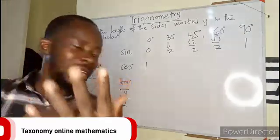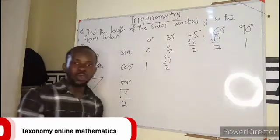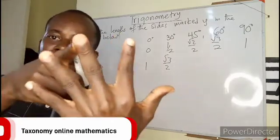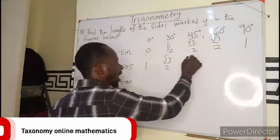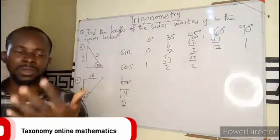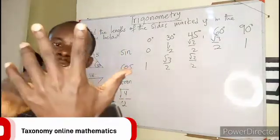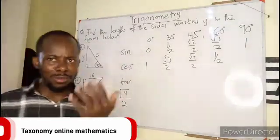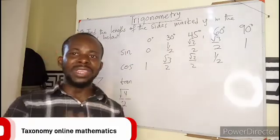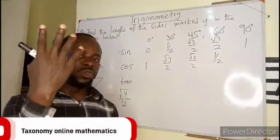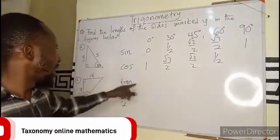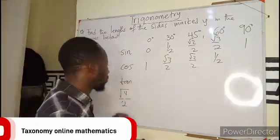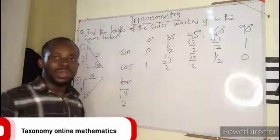30 above, how many? 3. So root 3 over 2. 45, there are 2 fingers, root 2 over 2. 60, how many fingers above? 1. So 1 over 2. Then the last one is 90. The fingers above will be 0. Can we see a pattern? If we check from sine: 0, half, root 2 over 2, root 3 over 2, 1. And cos: 1, root 3 over 2, root 2 over 2, half, 0.